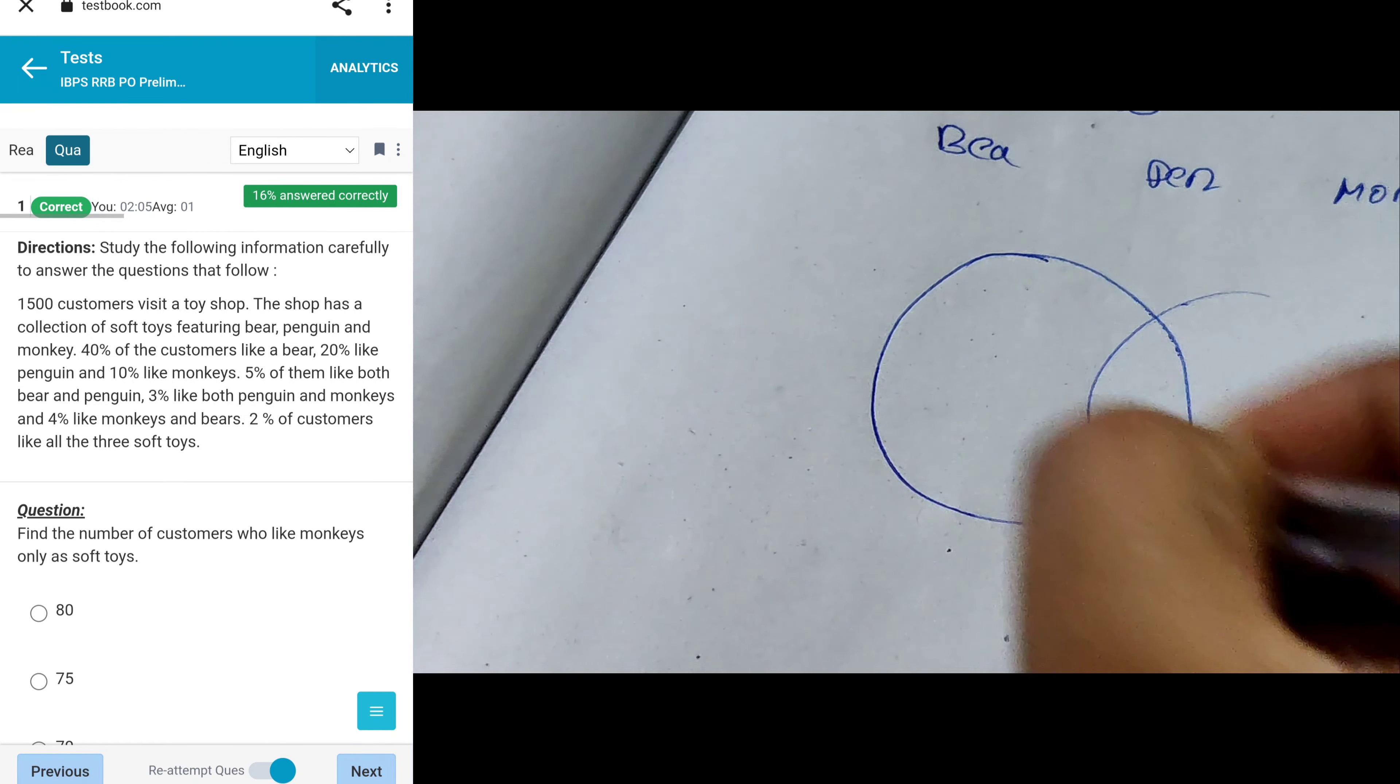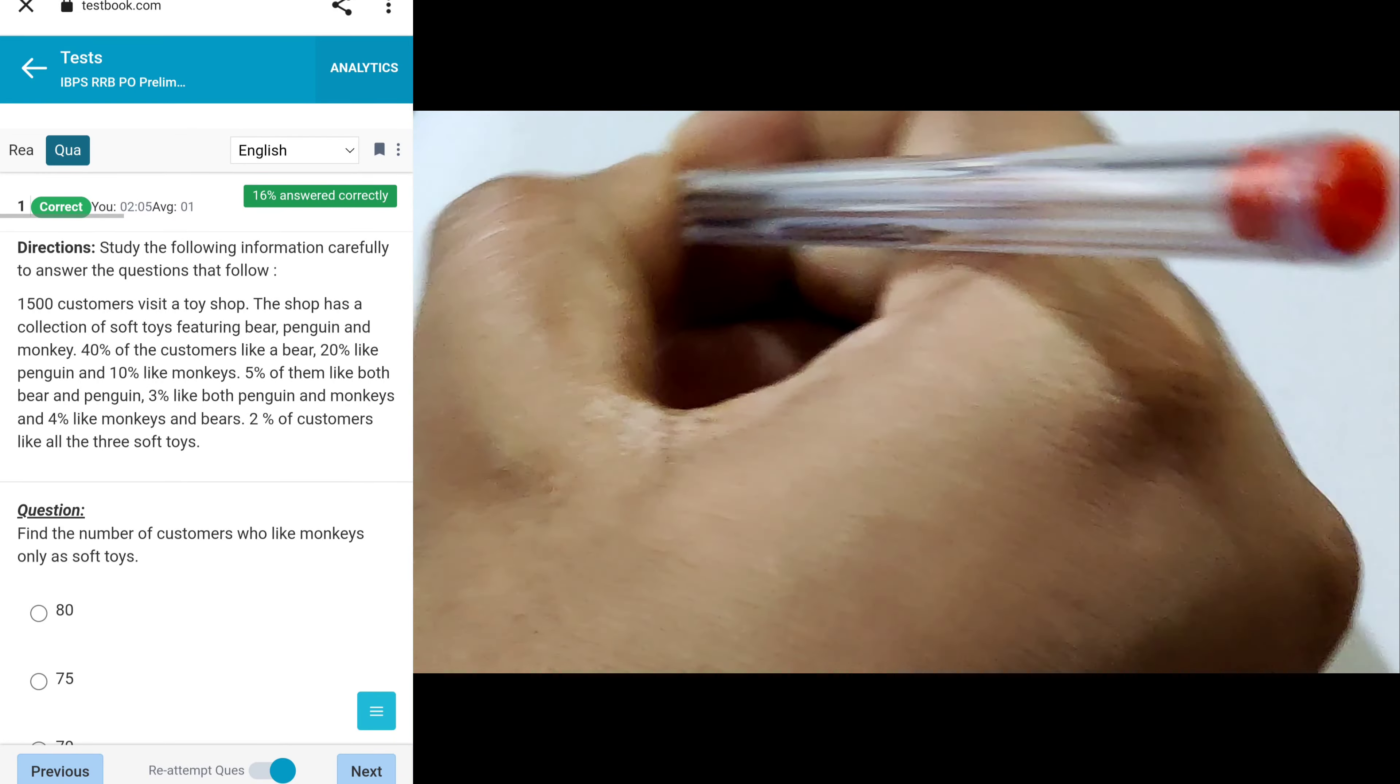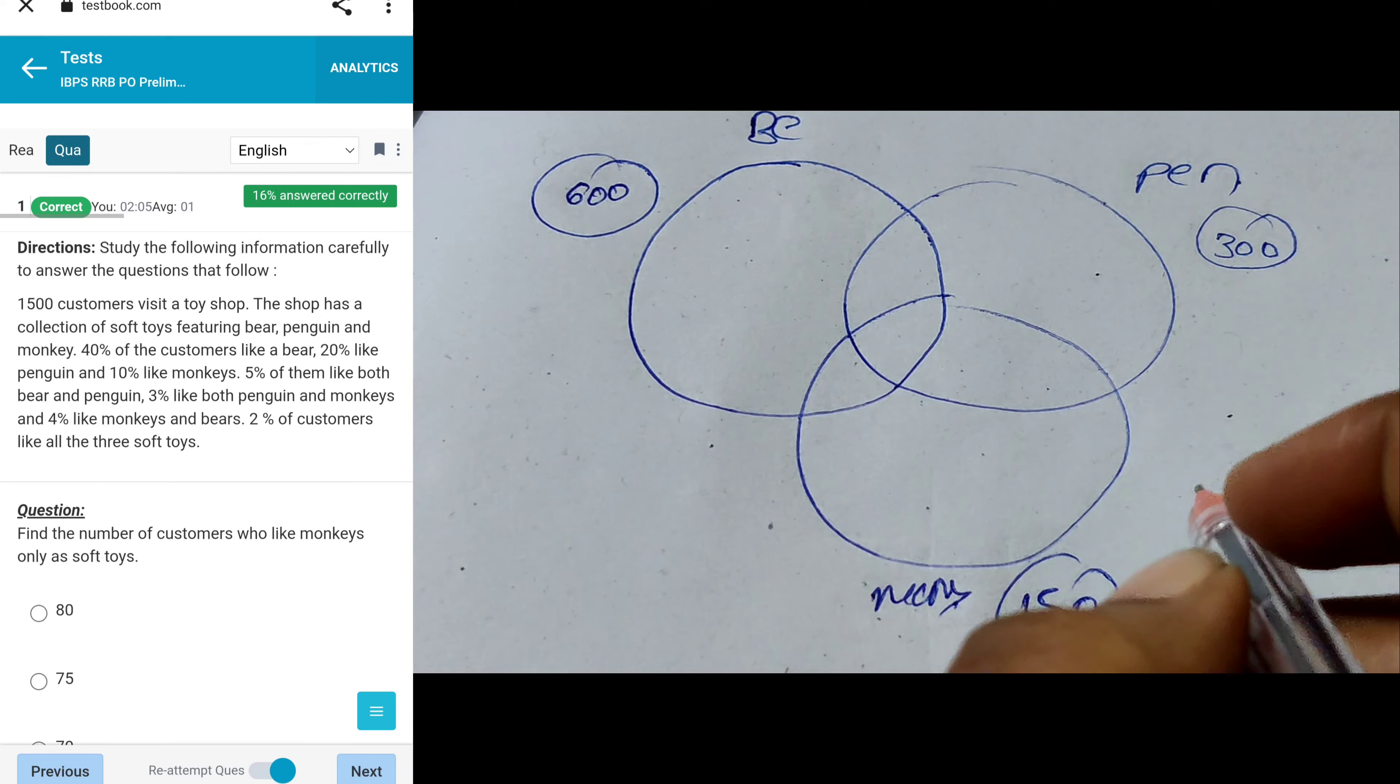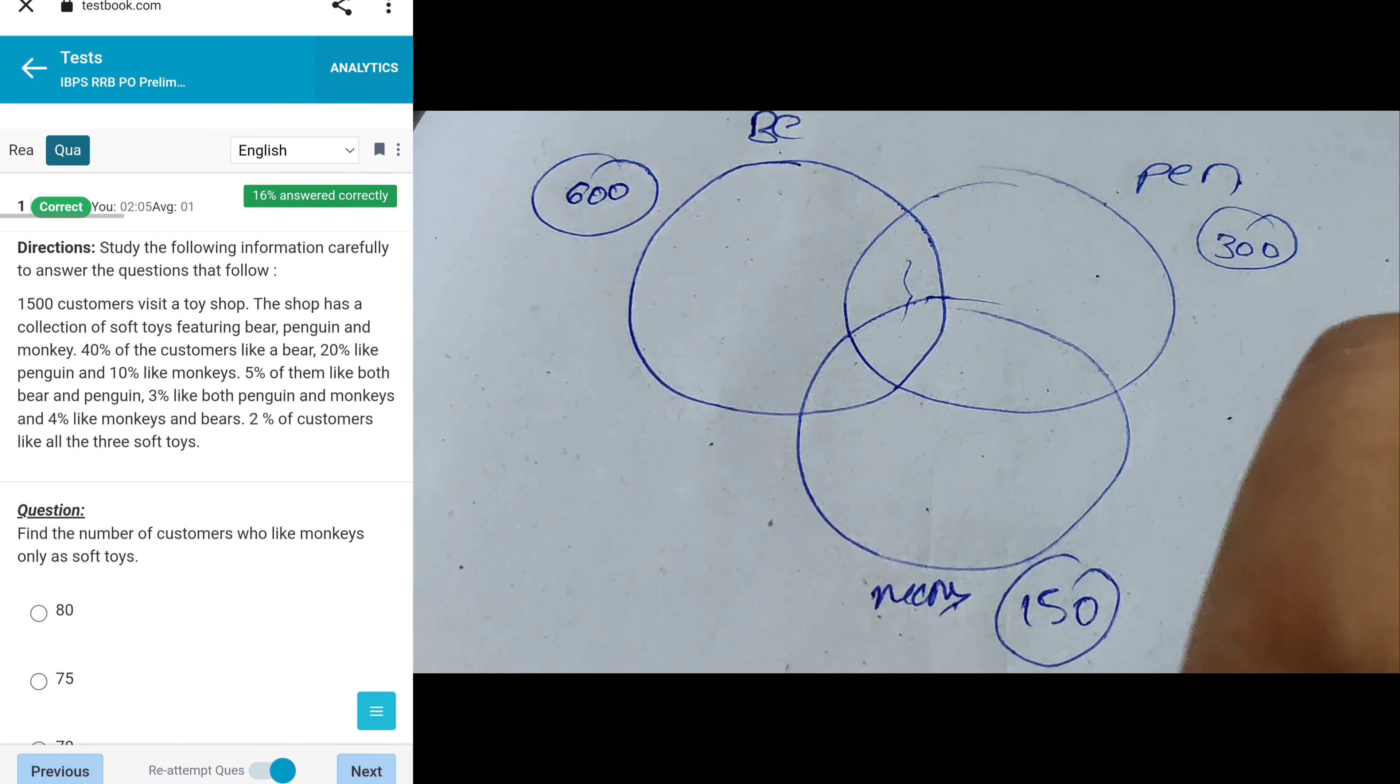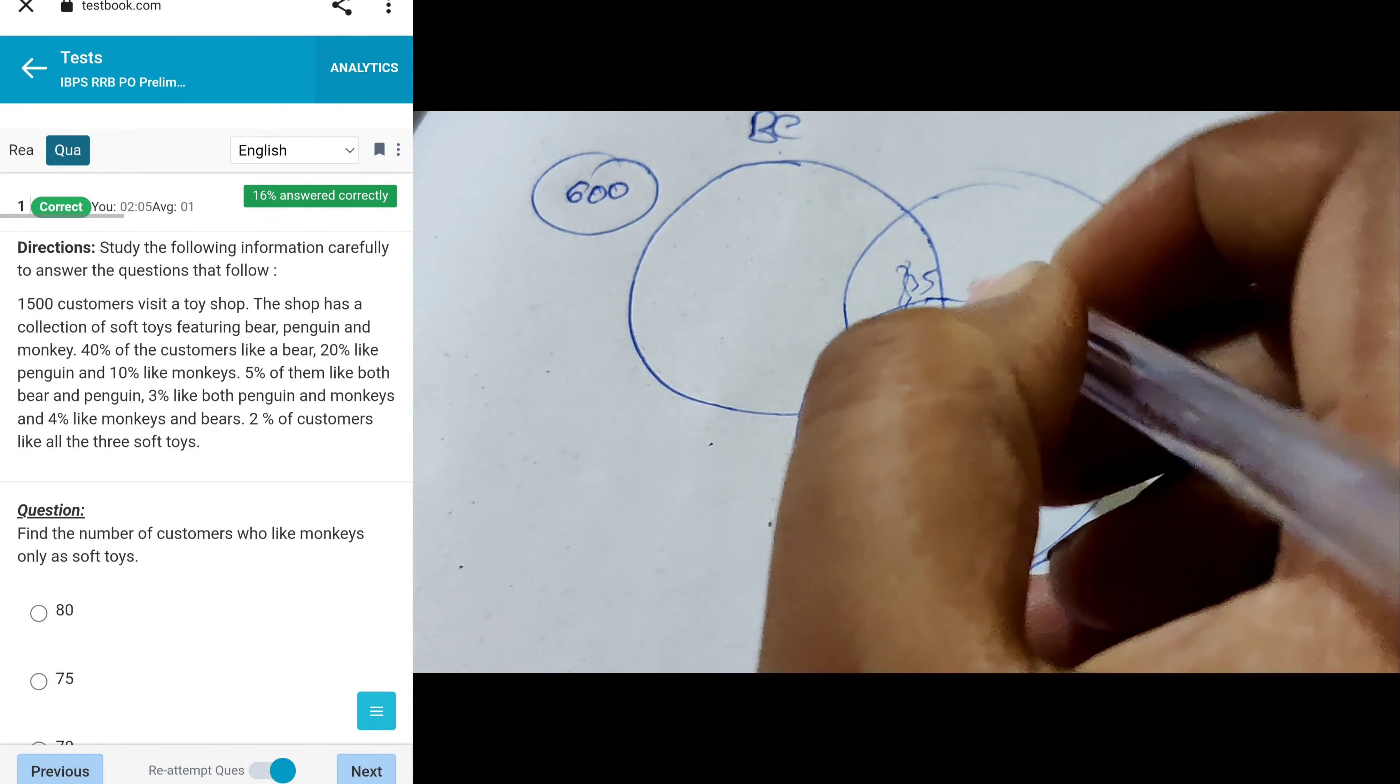This is a Venn diagram type DI with bear, penguin, and monkey. Given 40% customers like bear, so that's 600. Next, 20% like penguin, which is 1/5 meaning 300. And 10% like monkey, that's 150. Then 5% of them like both bear and penguin, so 5% is 75. And 3% like both penguin and monkey, so that's 45.